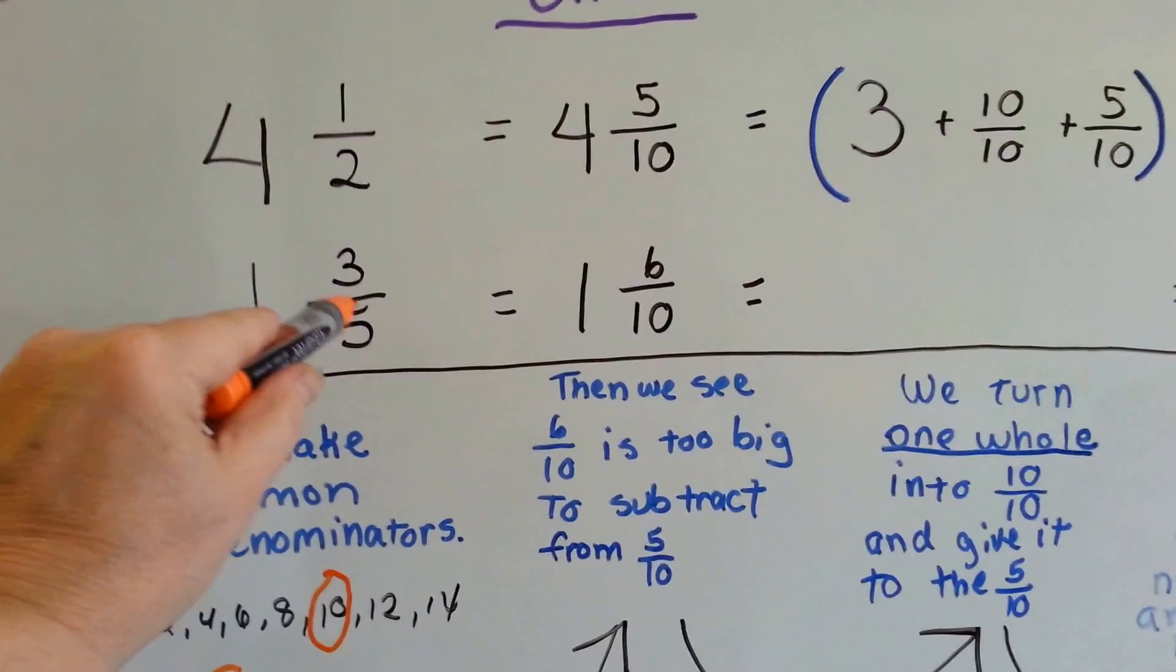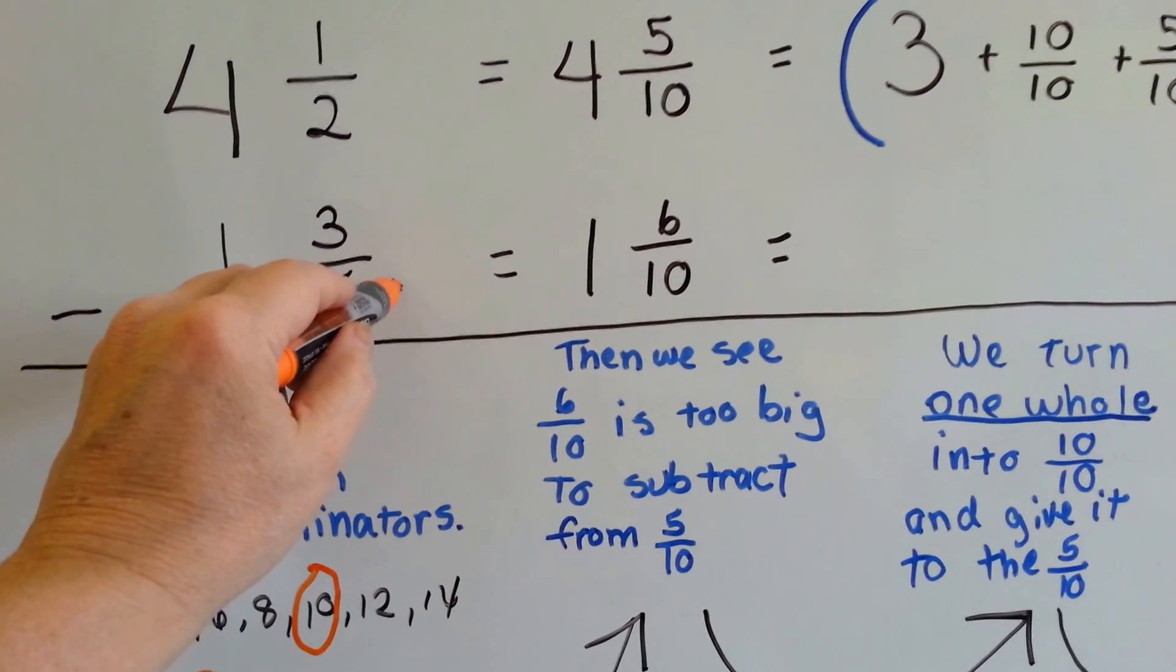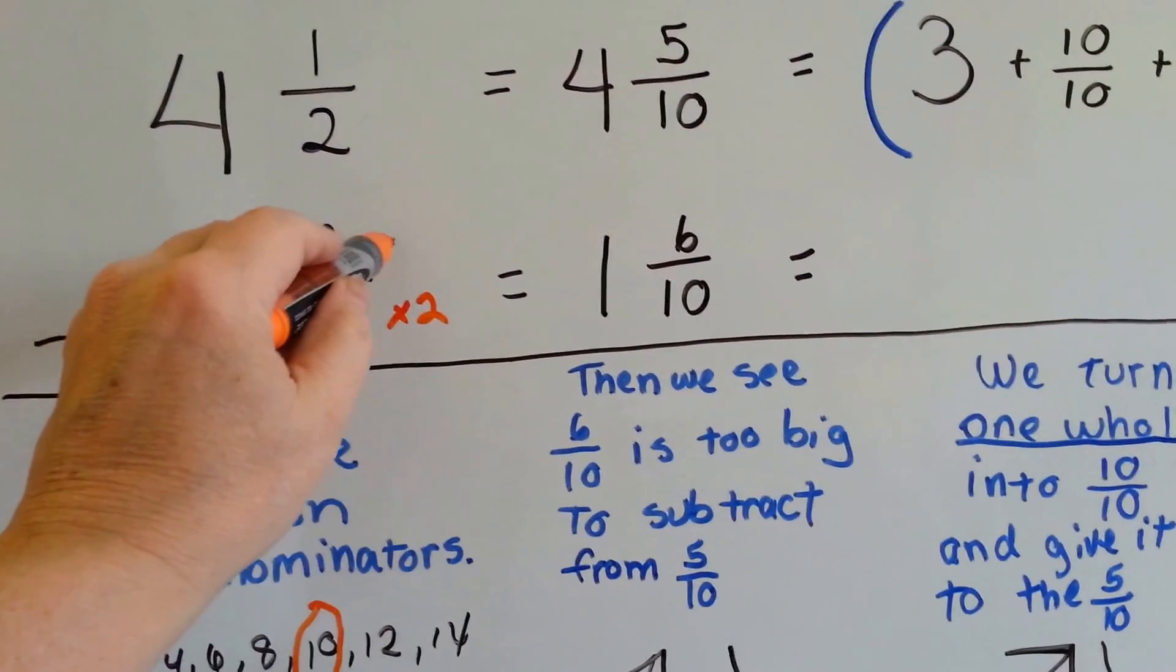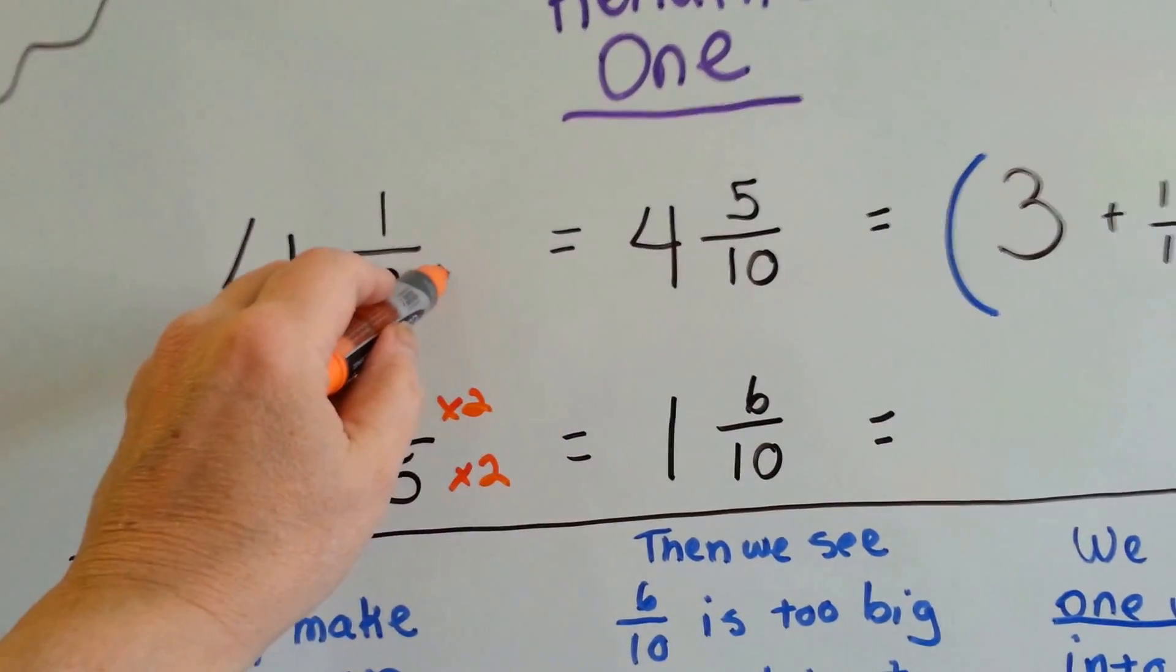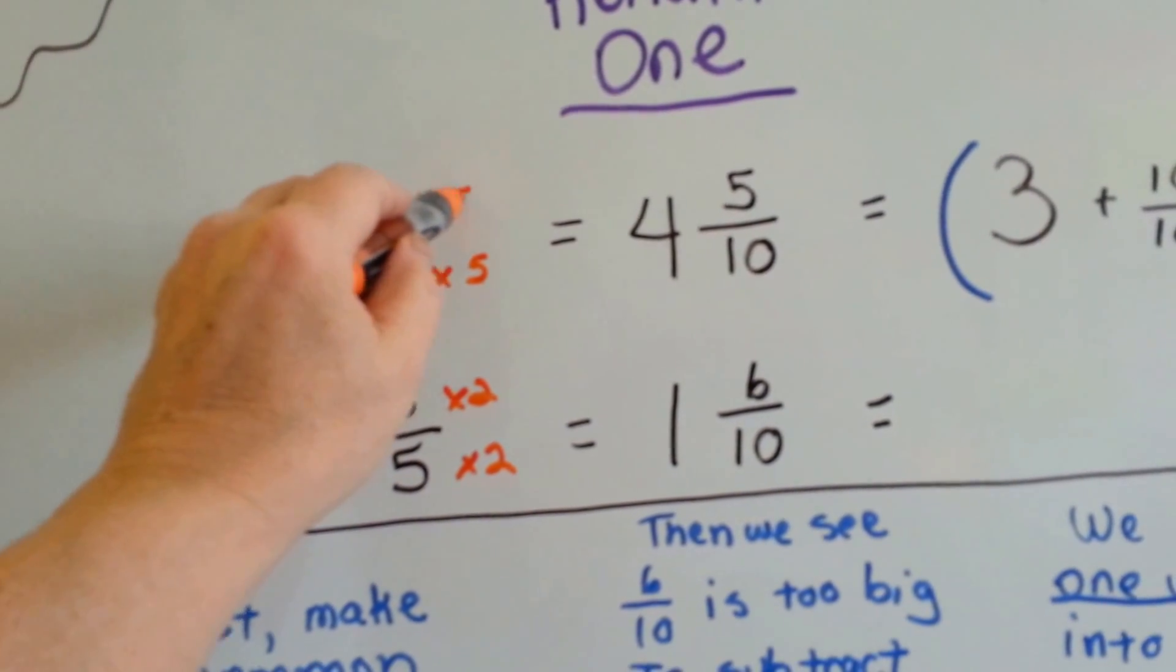the 5 said, what do I need to become a 10? So it multiplied by 2. So the 3 multiplied by 2. The 2 said, what do I need to become 10? It needed to be multiplied by 5 and the top got jealous.